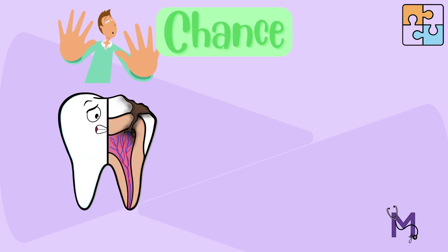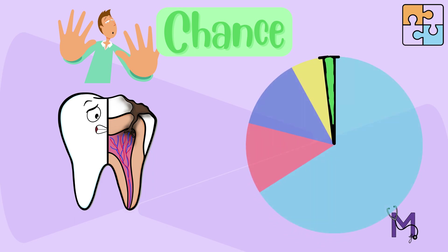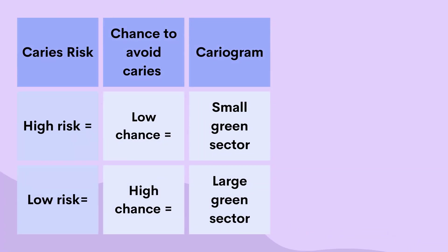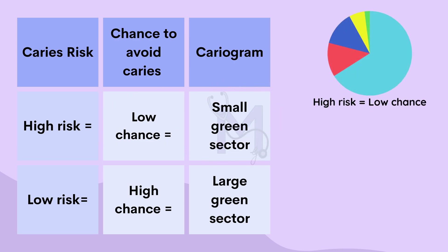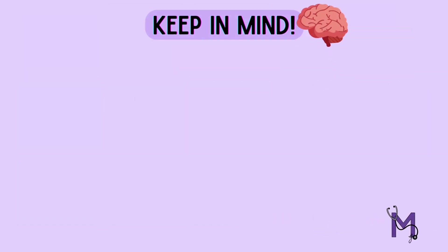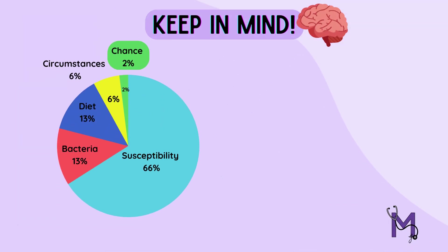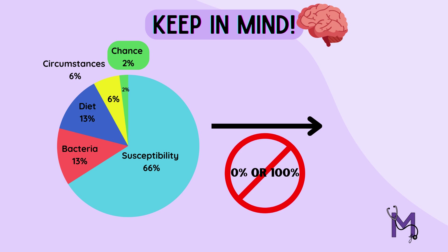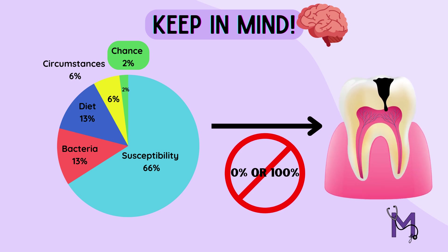Let's go a little in-depth in understanding what the chance to avoid caries really implies. This chance, represented on the graph by the green sector, along with the caries risk, are basically explanations for the same process but expressed inversely. As you can see in this table, if the caries risk is high, the chance to avoid caries becomes low and hence the green sector is small. But where there is a low risk of caries, there will be higher chances of avoiding caries and hence a large green sector. Keep in mind that the program would never, under normal circumstances, display a 0% or 100% chance of avoiding caries unless the decimal had been rounded up to these values.